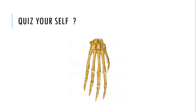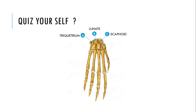It's time to quiz yourself. Can you identify the bones that are forming the wrist joint? These are the triquetrum, lunate, and scaphoid.